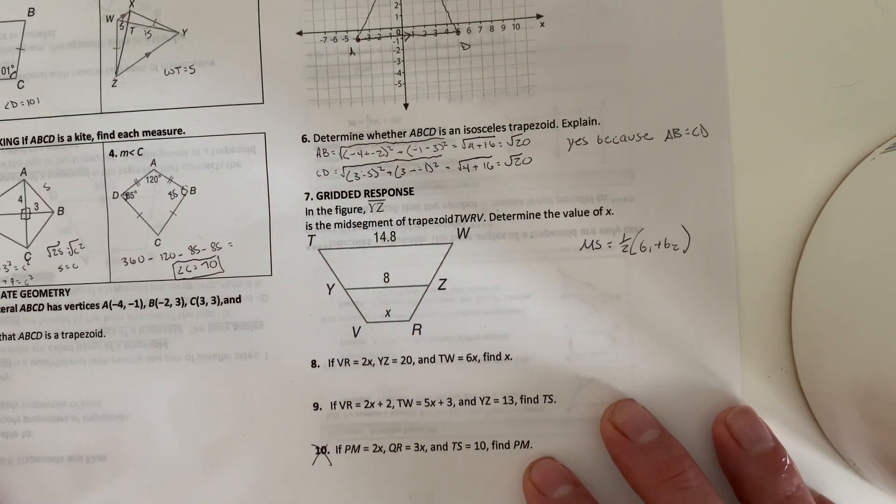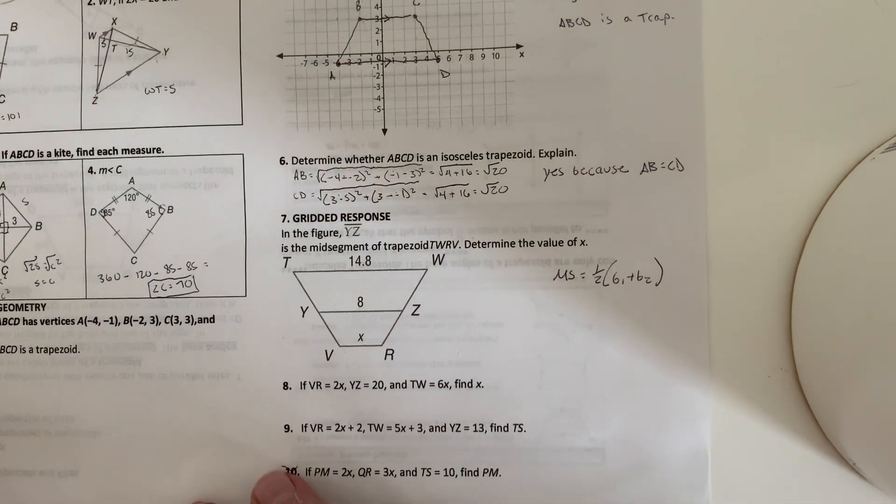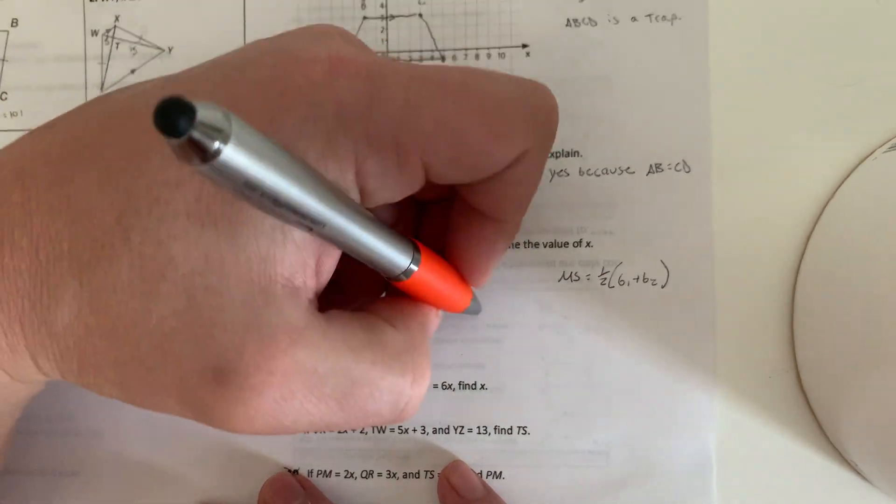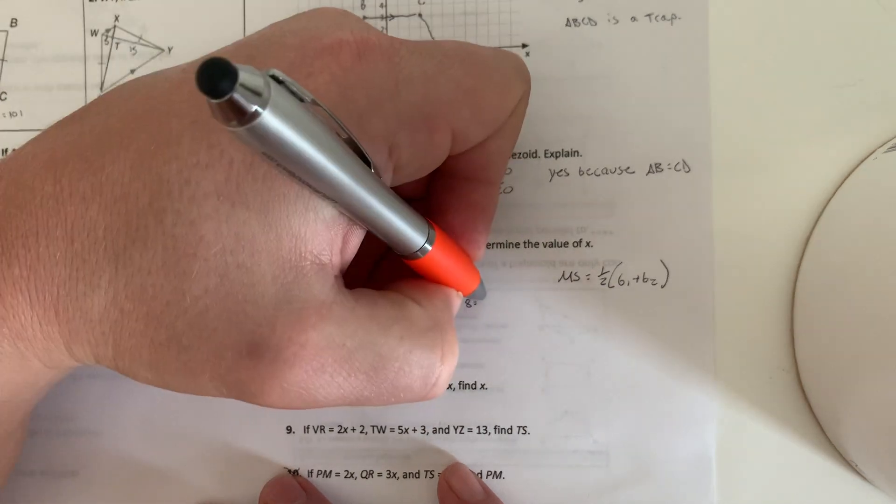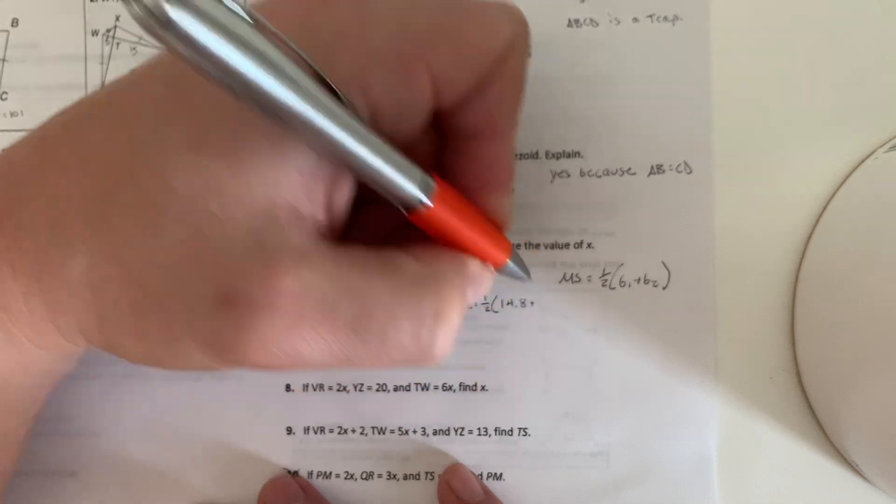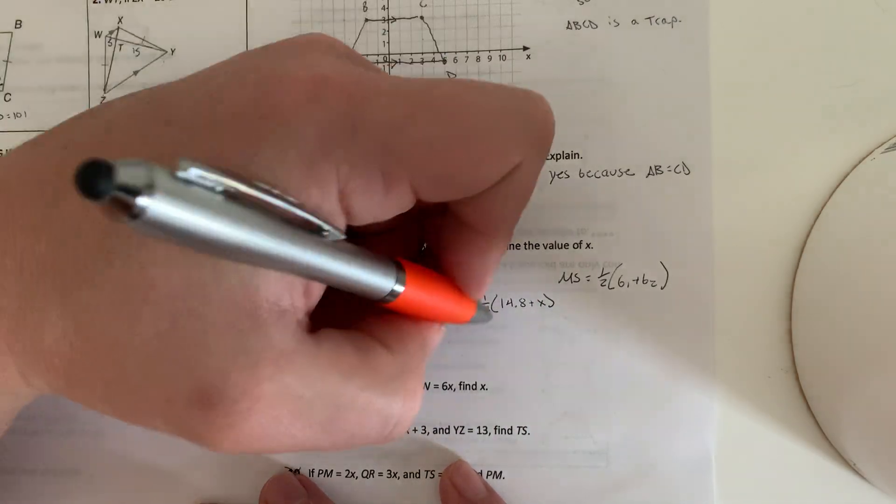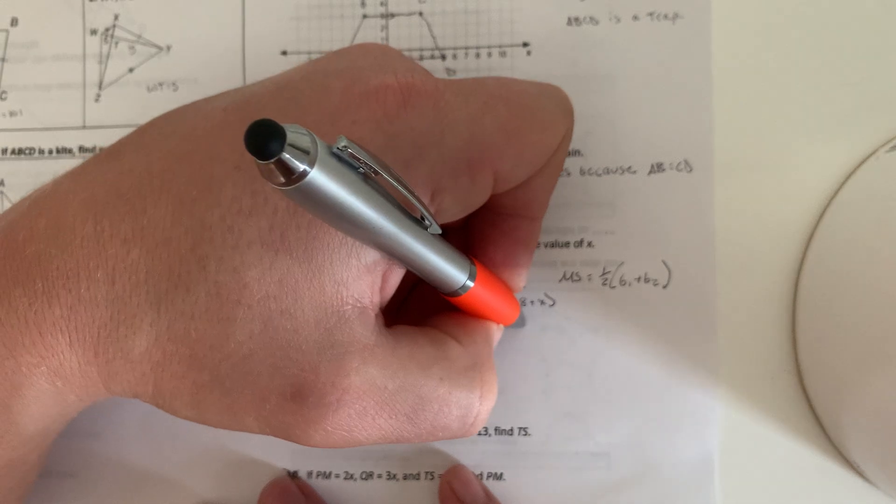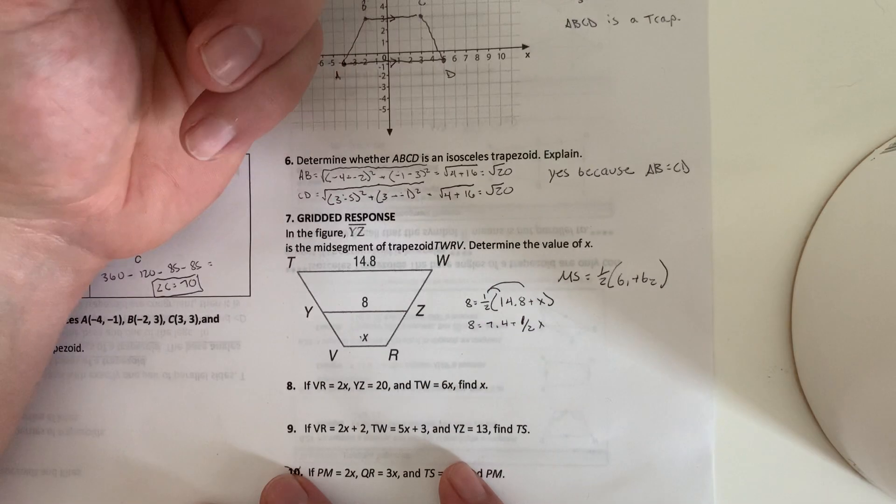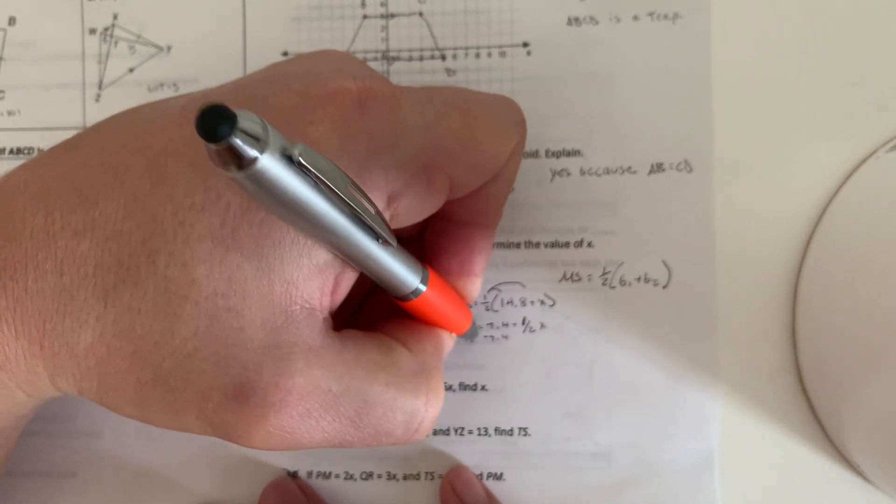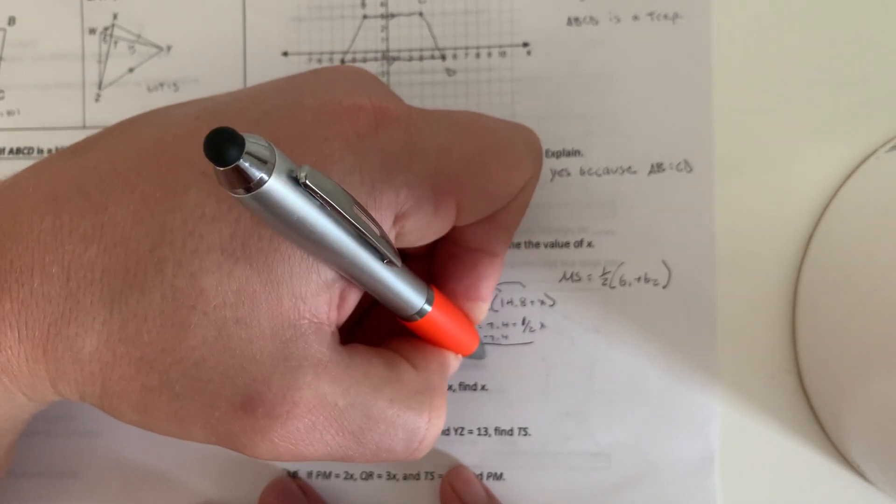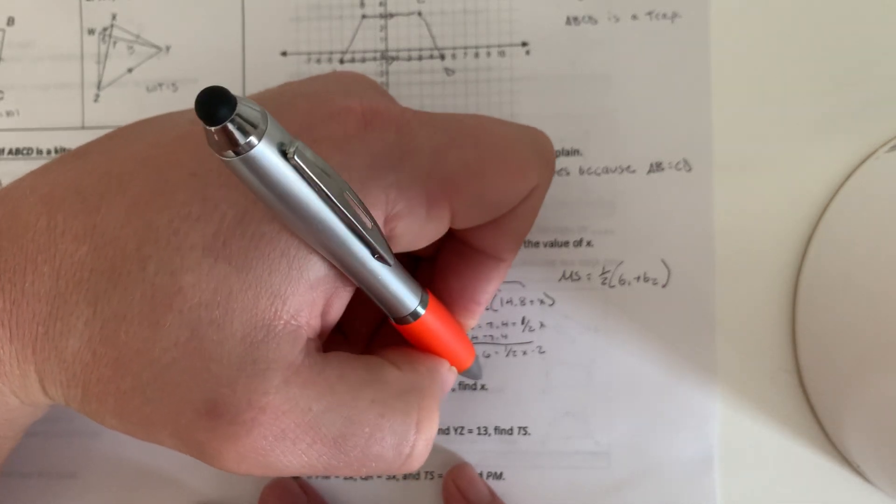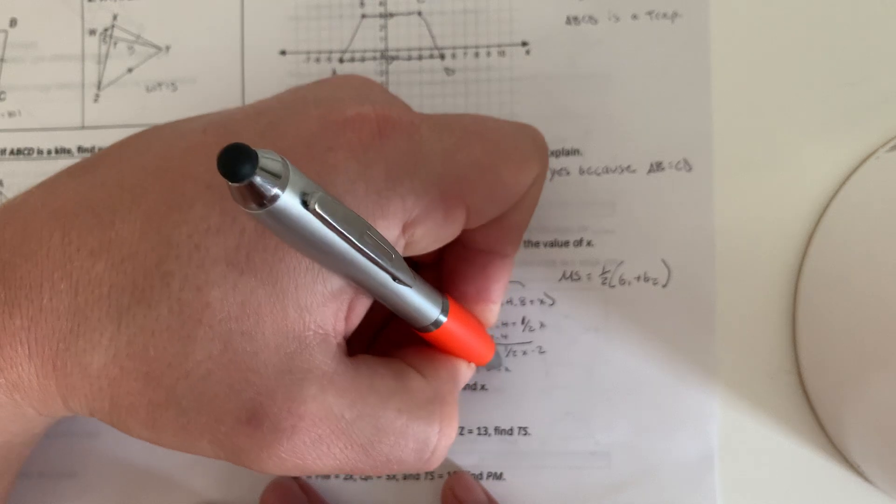So for number 7, what you've got to do, we're trying to find the mid-segment, or we're trying to find X. Well, X is for base 1 or 2. So we're going to have 8 as our mid-segment equals 1 half. I did 14.8 plus X. Well, so we're just going to distribute that 1 half. Half of 14.8 is 7.4, and then half of X is just 1 half X. I'm going to subtract 7.4. So I get 0.6 equals 1 half X. I'm going to multiply both sides by 2, and I get 1.2 equals X for number 7.